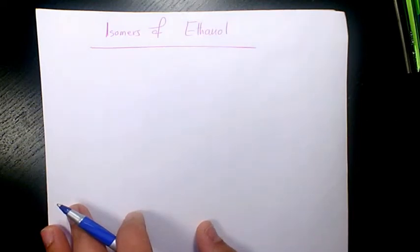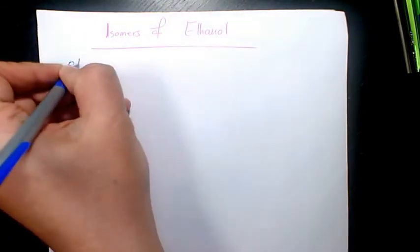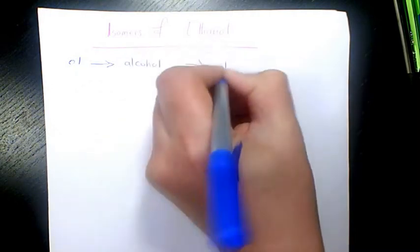What's up guys, this is Massey. Welcome to another video. In this video I want to show you the isomers of ethanol. Ethanol, since it ends with O, means that's the alcohol.